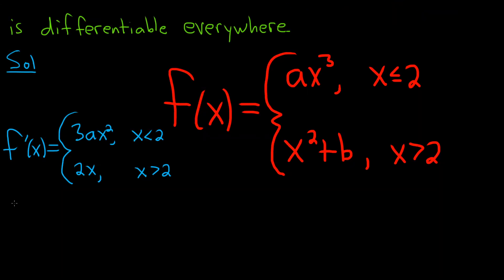So we want the derivative at 2 to be the same. If we were to plug in 2 into this function, plug it in here and plug it in here, we want to get the same thing. So we want 3a times 2 squared to be equal to 2 times 2.